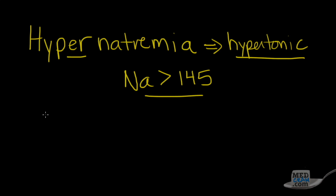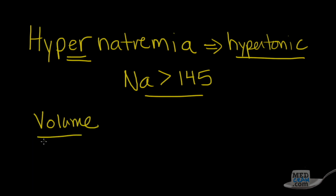So the next thing you need to figure out when someone has a high sodium concentration on their blood test is what it's due to. You've just got to figure out what the volume status of the patient is — is the volume too high, or hypervolemic? Is it too low, or hypovolemic? Or is it the same, what we call isovolemia?